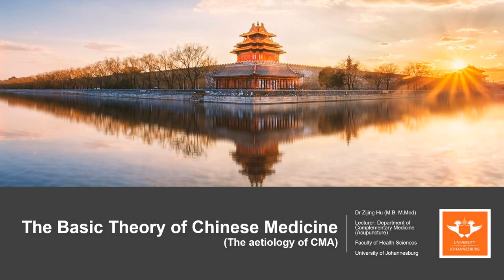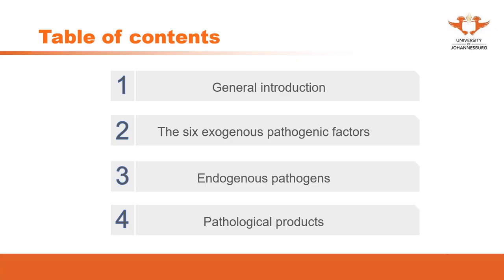Hello everyone. In this video, we are going to talk about the etiology of Chinese medicine and acupuncture. In this category, we are going to discuss four categories: the general introduction, the six exogenous pathogenic factors, endogenous pathogens, and the last one is pathological products.